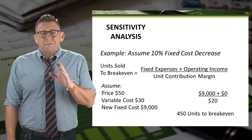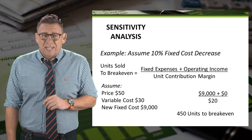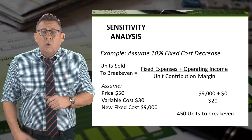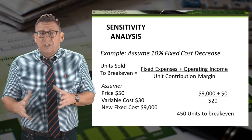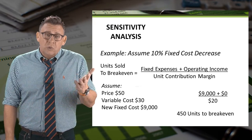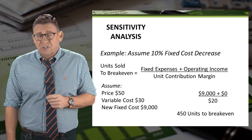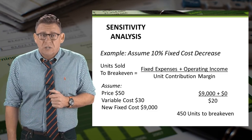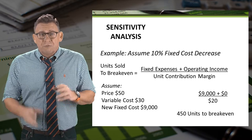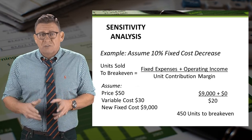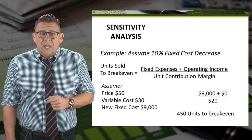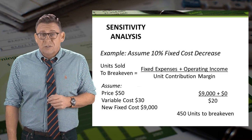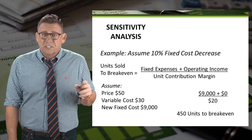What if fixed costs could be reduced by 10%? What is breakeven now? We need to calculate the new unit contribution margin. Only in this case, the unit contribution margin doesn't change because neither price nor variable costs are changing. So fixed costs are reduced from $10,000 to $9,000, and therefore breakeven in units decreases to 450 units with a fixed cost decrease.